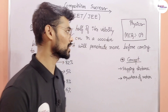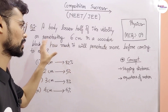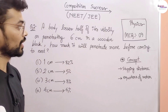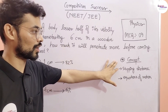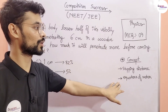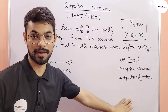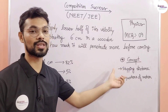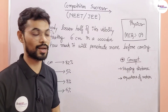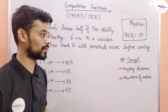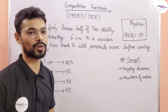So today we have Physics MCQ number 9. I have a question, and this question is about the stopping distance using the equations of motion. We have already covered this concept before.